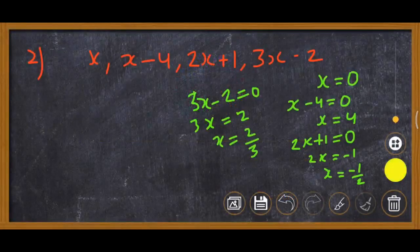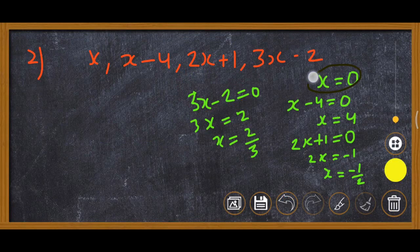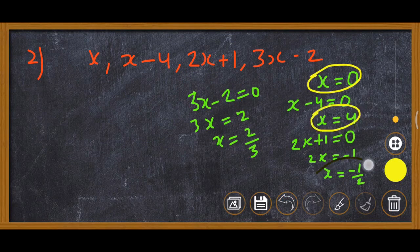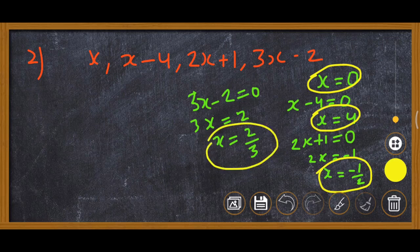Our values are: first one x equals 0, then x equals 4, x equals minus 1 upon 2, and x equals 2 upon 3.